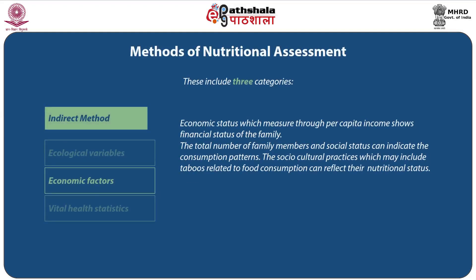Economic factors include per capita income, population density, and social habits. Economic status measured through per capita income shows the financial status of the family. The total number of family members and social status can indicate consumption patterns. Socio-cultural practices, which may include taboos related to food consumption, can reflect their nutritional status.